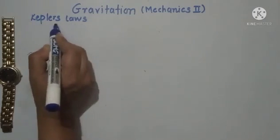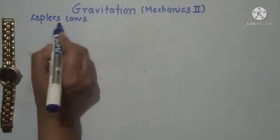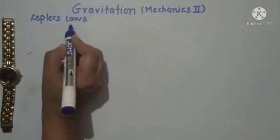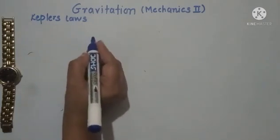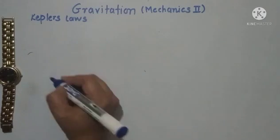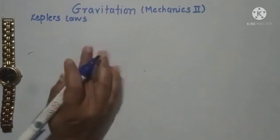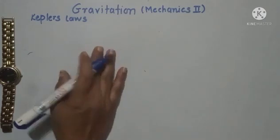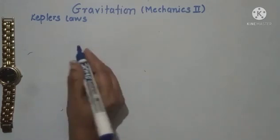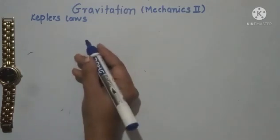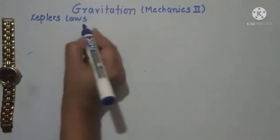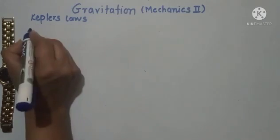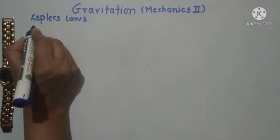Kepler was the first scientist who gave laws regarding planetary motion — how planets revolve around the Sun, what is the period, and what is the area swept by the radius vector. He gave three laws.